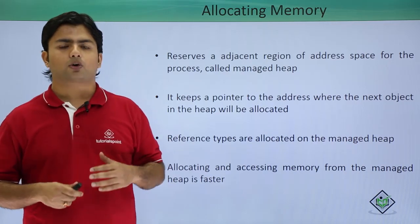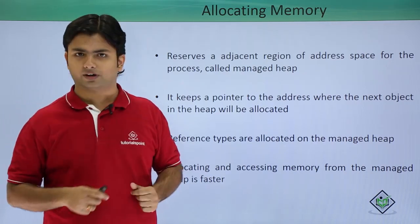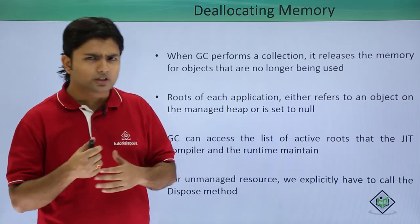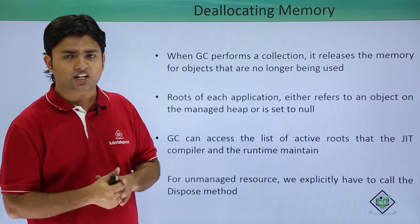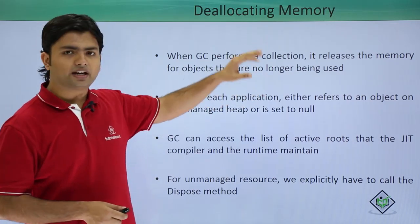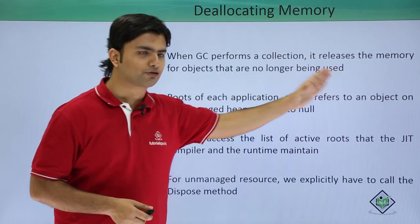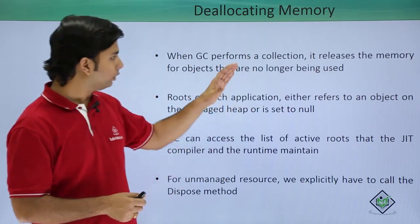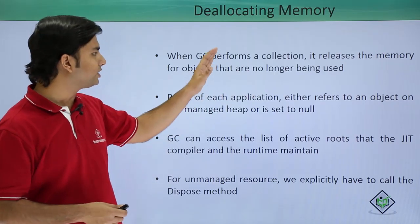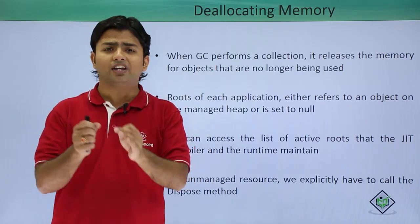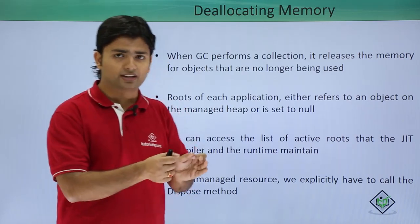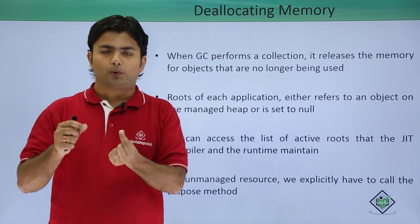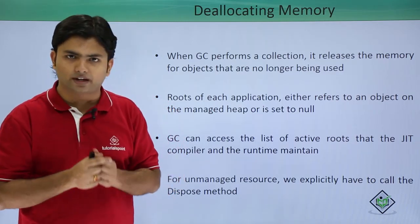Now let's talk about how de-allocation works. For de-allocation, garbage collection after a particular interval of time keeps on doing collection. In that collection, it releases the part of memory that has not been used for the last few moments. On that basis, garbage collection can remove the unused older objects from the managed heap. Starting for that, we have a root which begins pointing from the first element of the managed heap.